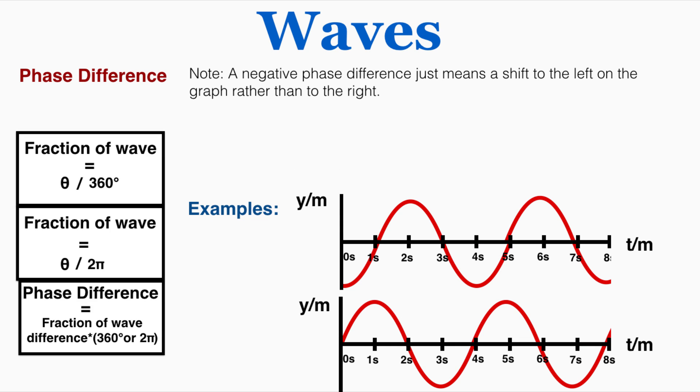Just one last note, a negative phase difference just means a shift to the left on the graph rather than to the right. So here this graph has been shifted by 1 fourth of its period to the left so that means the fraction of the wave that's been shifted is negative 1 fourth so the phase difference is negative 90 degrees or negative pi over 2.